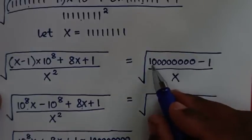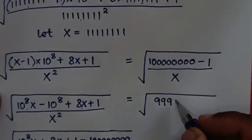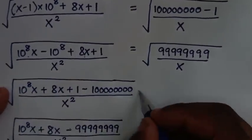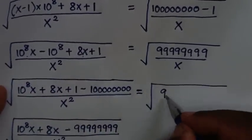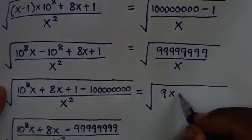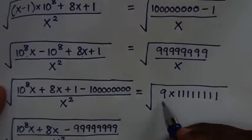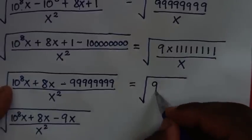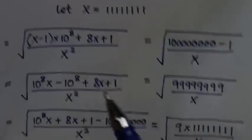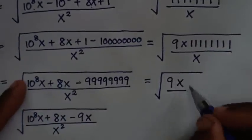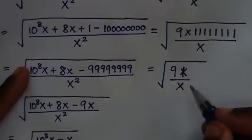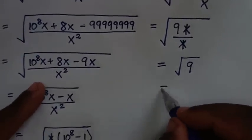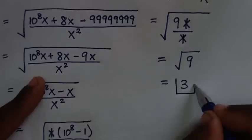10 to the power of 8 is 1 with 8 zeros: 100000000, then minus 1 gives us 99999999 — eight 9s — over x. This is the same as 9 times ones-8, which is 9 times x, over x. So it will be equal to the square root of 9 times x over x. Now x cancels x, so it will be equal to the square root of 9, and the square root of 9 is equal to 3. So 3 is our final answer.